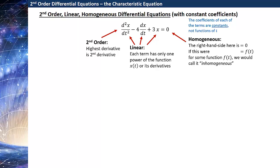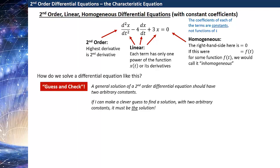So how would we solve a differential equation that looks like this? Well, there's a general technique which is called guess and check. The strategy there is we recognize that a general solution of a second-order differential equation should have two arbitrary constants. And so if you can make a clever guess to find a solution and it has two arbitrary constants, it must be the solution. This is one of the better strategies there is, and the game is just to figure out good guesses. When you have constant coefficients, it turns out there is a set of really good known guesses, which we'll talk about in just a second.